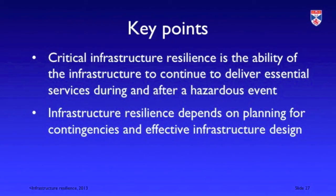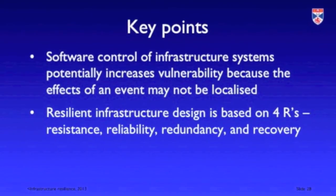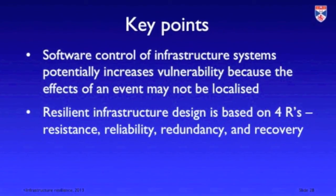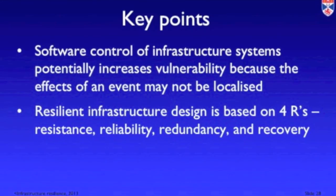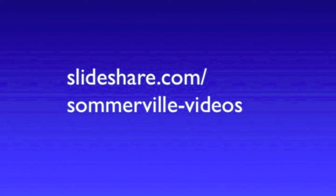In summary, critical infrastructure resilience is the ability to keep delivering services when a disruptive event happens. It depends on planning for contingencies and designing the network with redundancy and reliability in mind. Software control potentially increases the problem because software failures can spread quickly across a network. We achieve a resilient infrastructure using the four R's: resistance, reliability, redundancy, and recovery. You can download the slides accompanying this video from my SlideShare account.